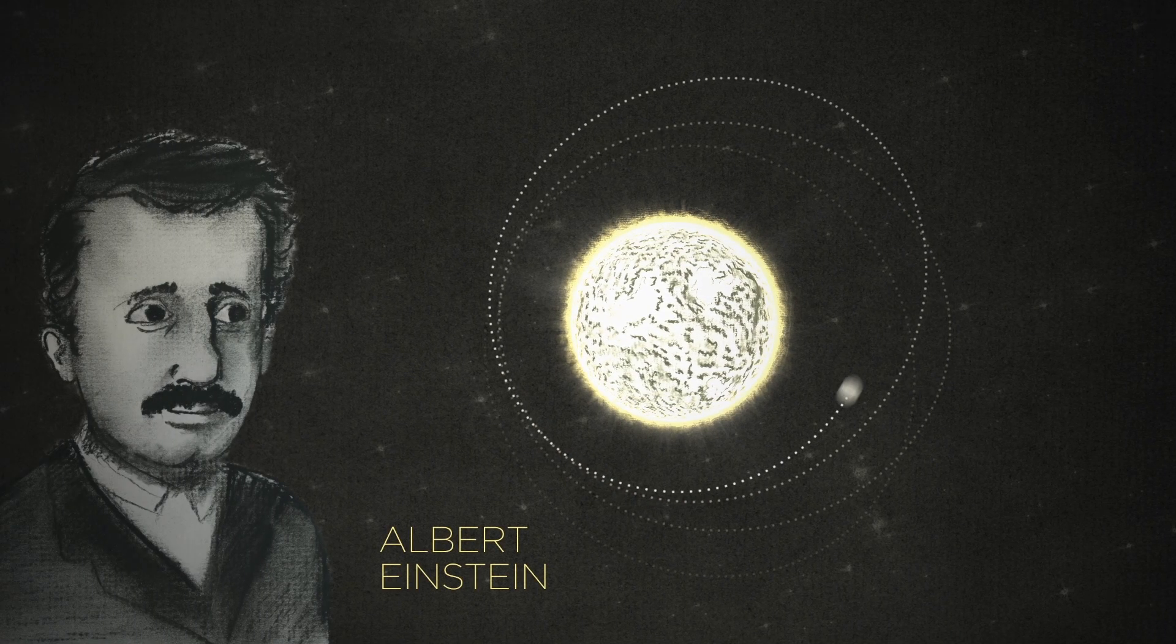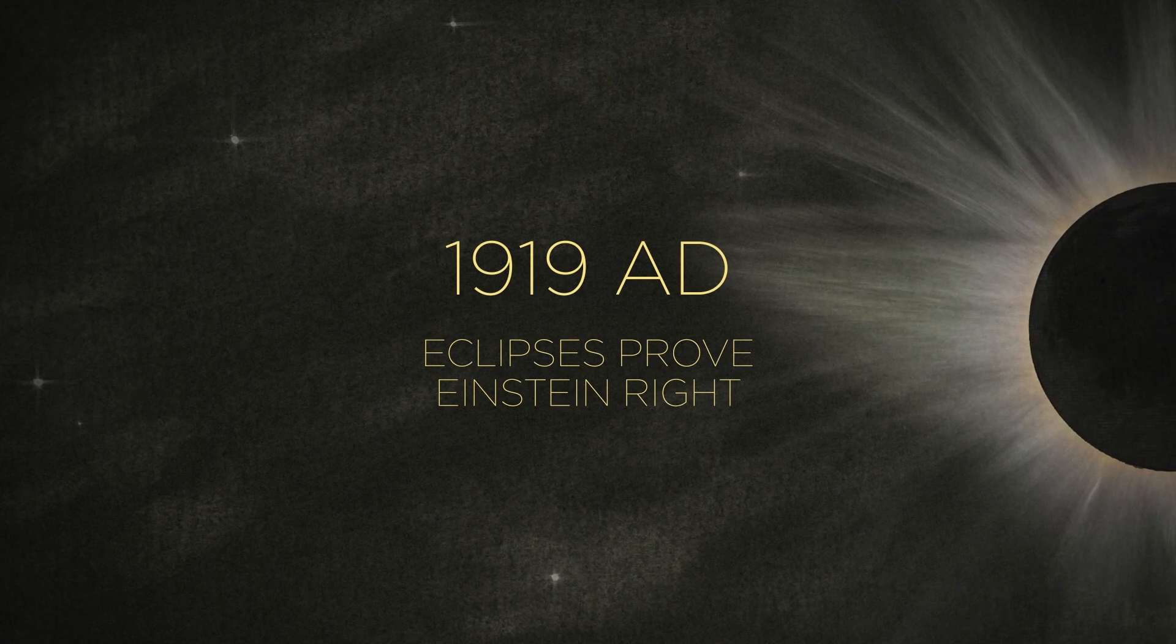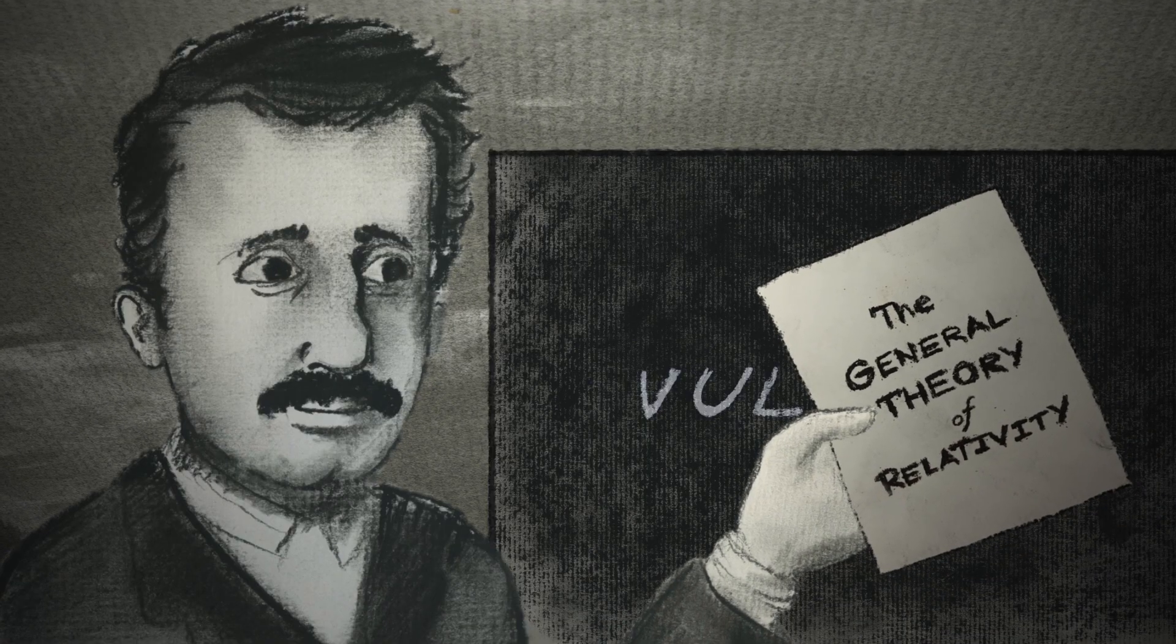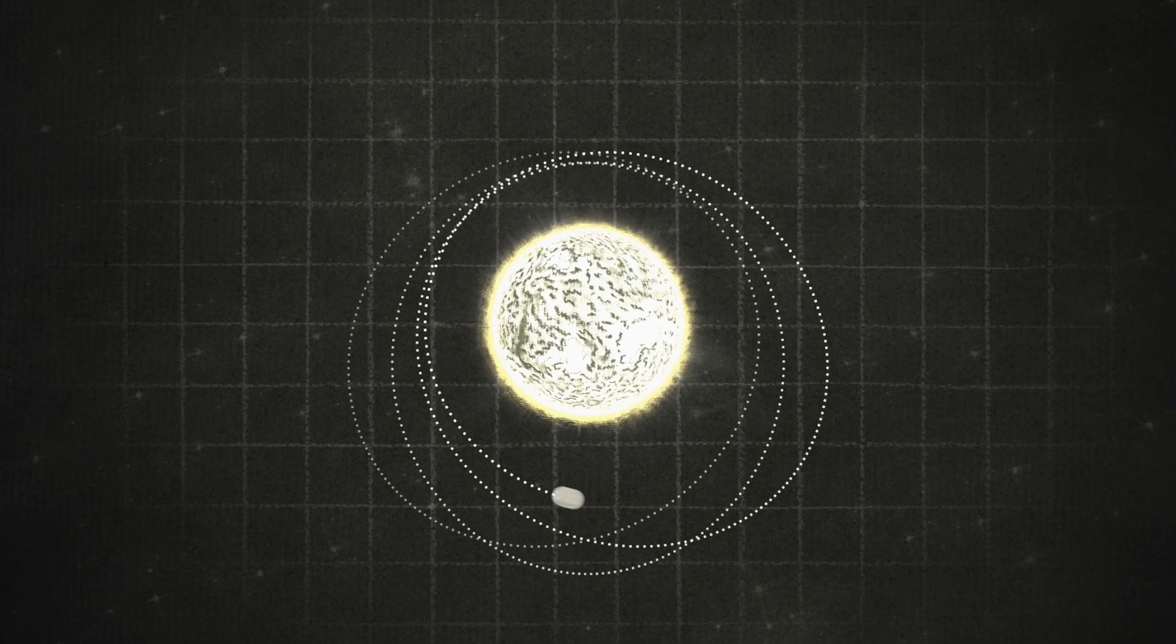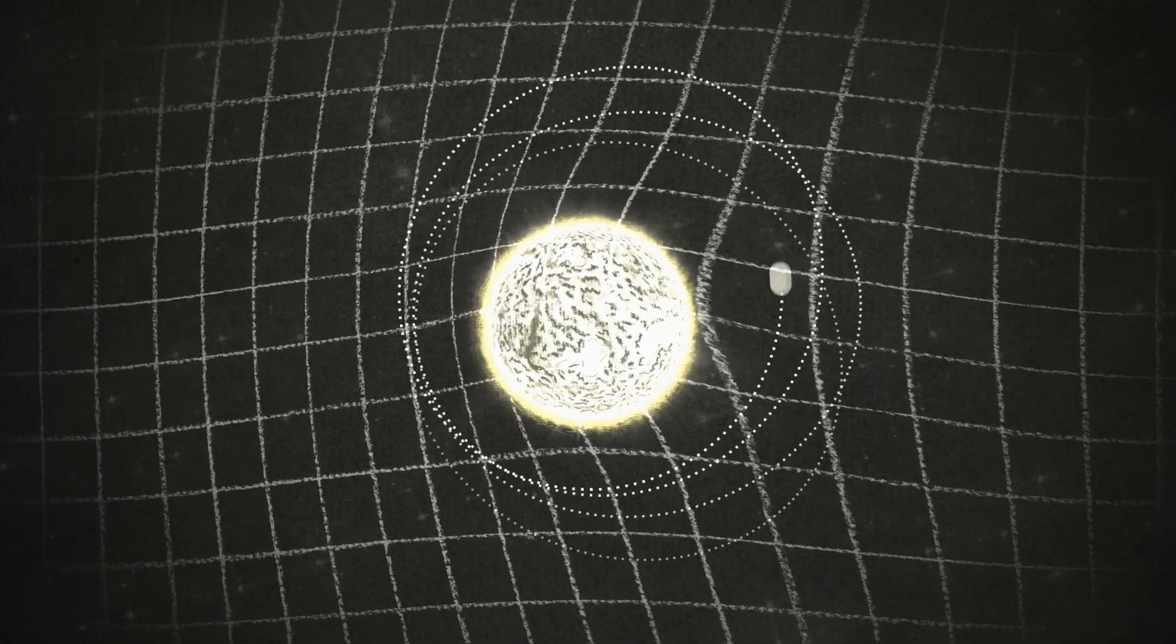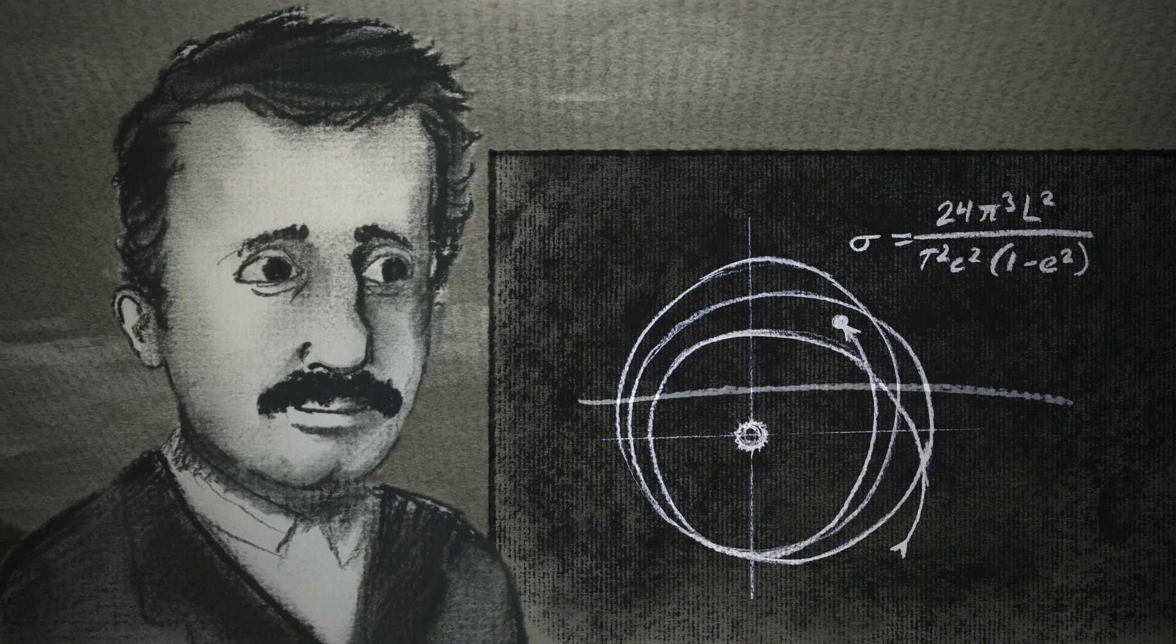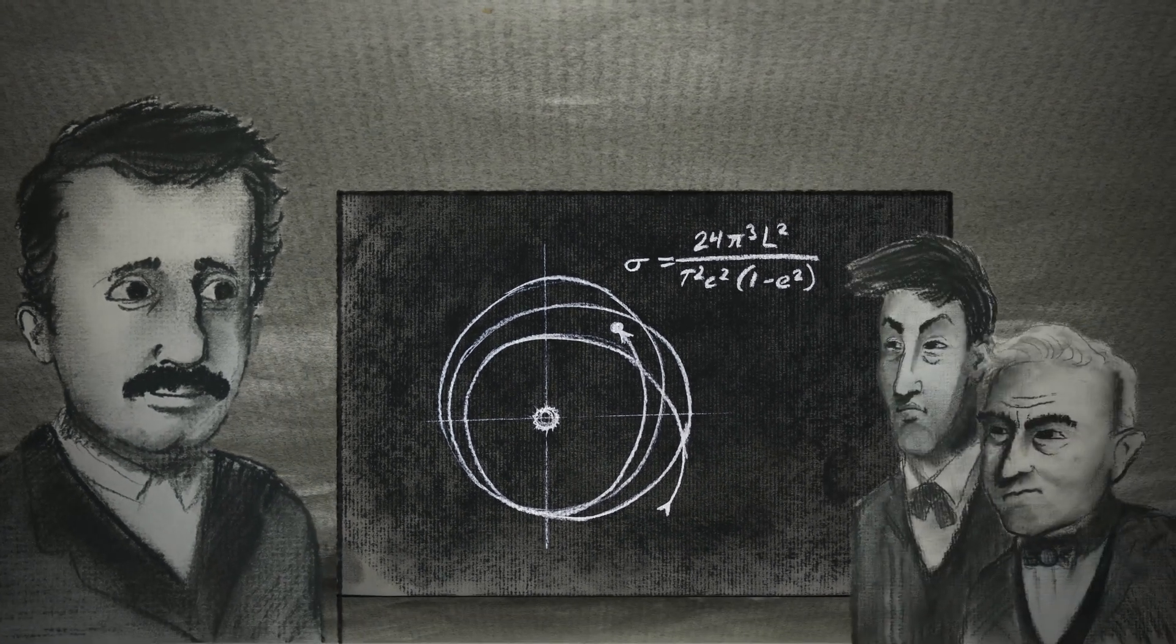Einstein had this radical new theory, the general theory of relativity. And it made Vulcan unnecessary. According to the theory, Mercury was thrown off course because the sun's bulk was warping the very fabric of space-time. Einstein's equations predicted the wobbly orbit perfectly. But as always, some people demanded more proof.